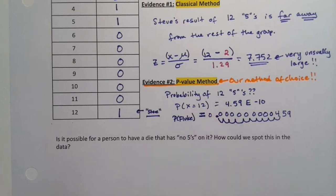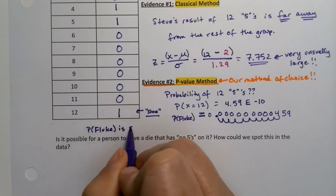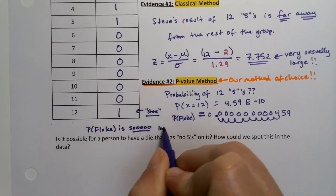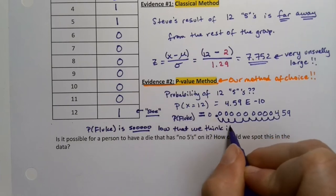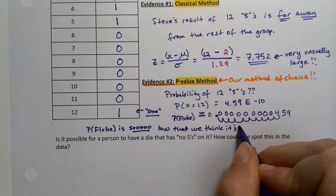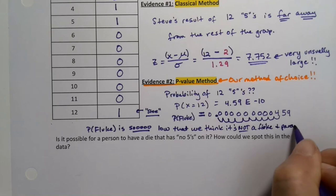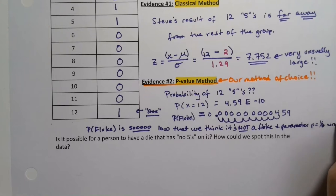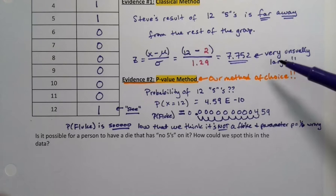That is so low that we don't think it's a fluke. We think the parameter is wrong. In other words both of these methods are leading to the conclusion that the parameter is wrong but they're doing it in different ways.